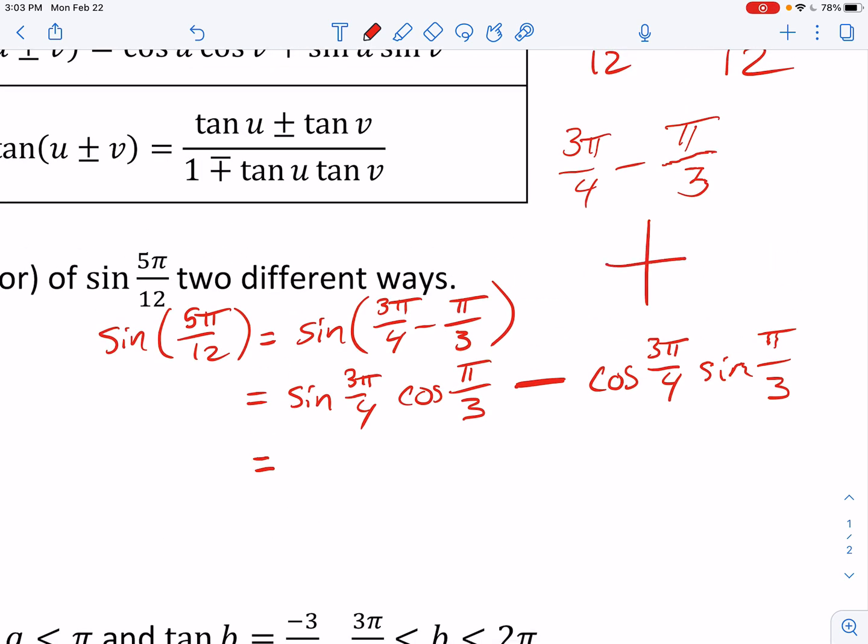So sine of 3 pi over 4, it's positive root 2 over 2. Cosine of pi over 3, that's 1 half, minus, now the cosine value here is negative, negative root 2 over 2, because that's in quadrant 2, cosine is negative in quadrant 2. Sine of pi over 3 is root 3 over 2.